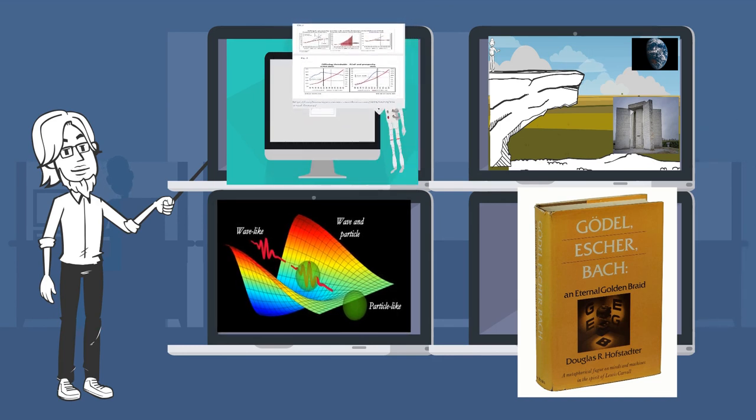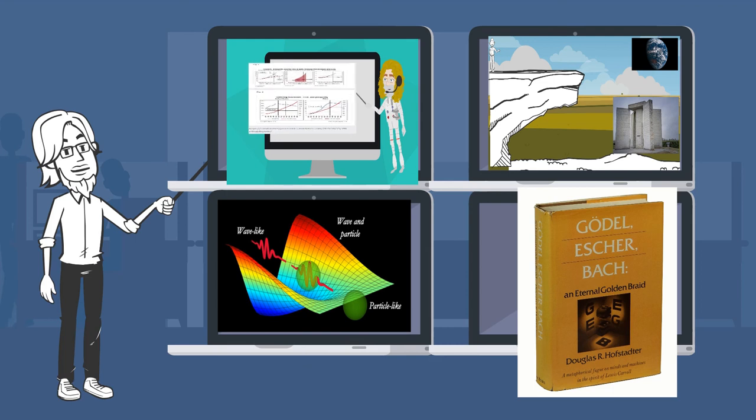A Joke: Heisenberg, Gödel, and Chomsky walk into a bar. Heisenberg looks around the bar and says, because there are three of us and because this is a bar, it must be a joke. But the question remains, is it funny or not? And Gödel thinks for a moment and says, well, because we're inside the joke, we can't tell whether it is funny. We'd have to be outside looking at it. And Chomsky looks at both of them and says, of course it's funny. You're just telling it wrong.